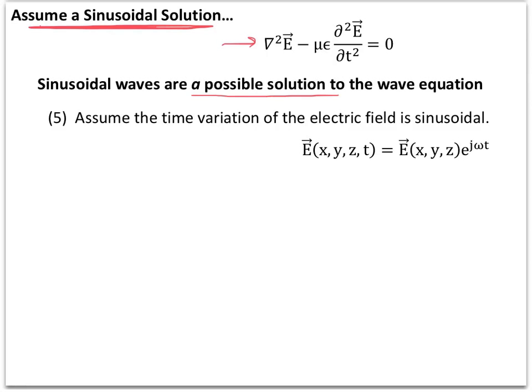My next assumption is that the time variation of the electric field is sinusoidal. That means I can take the time variation of the electric field and pull it out into an exponential term. This is something I can do — I can separate out the spatial and temporal variation of the electric field with no problem.